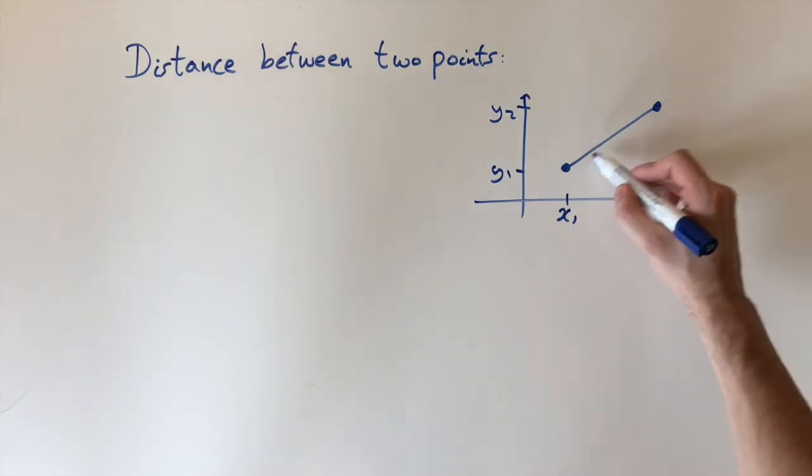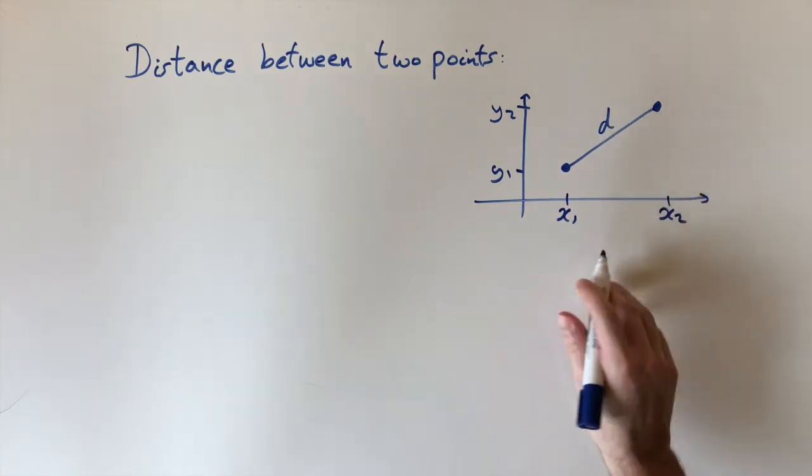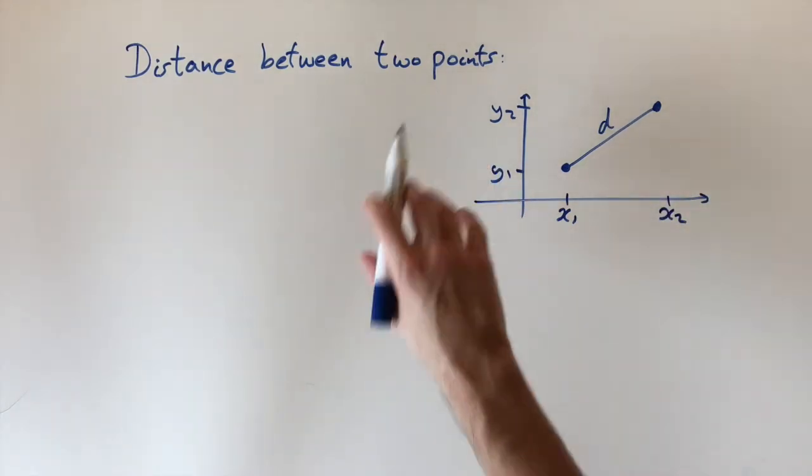And then the question is what is the distance between these two points? So if I label this d, we want to find a formula for d in terms of x1, x2, y1, and y2.